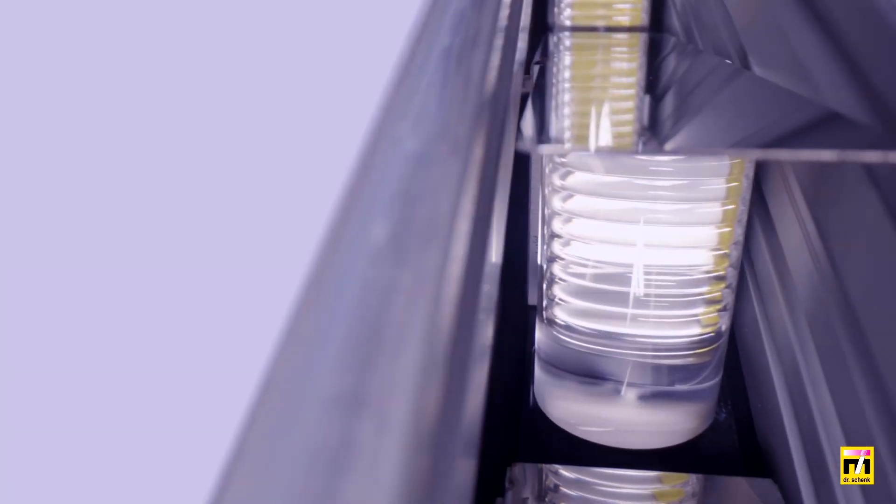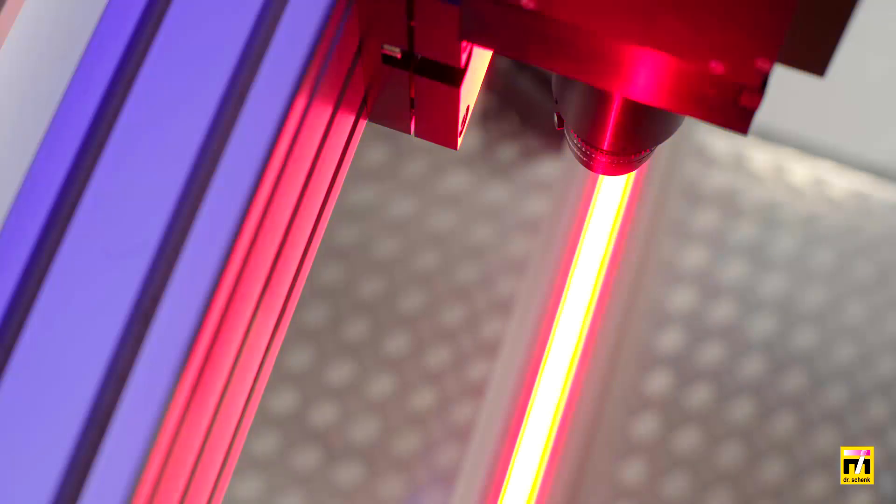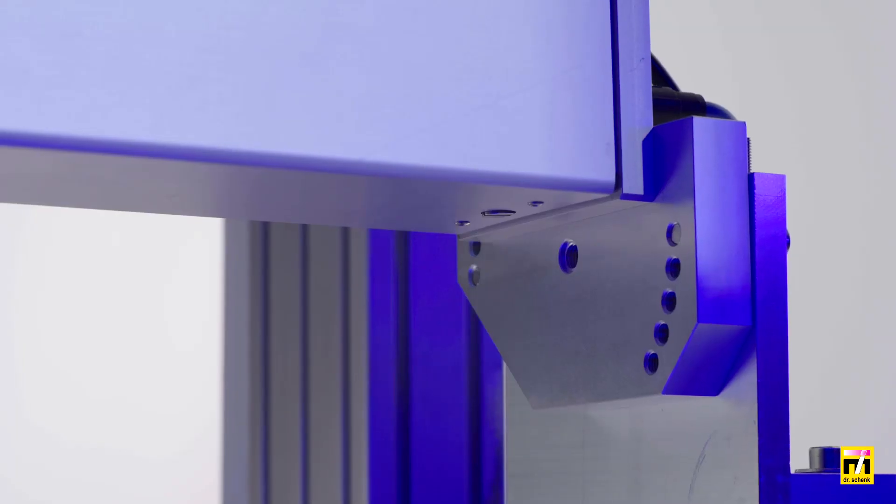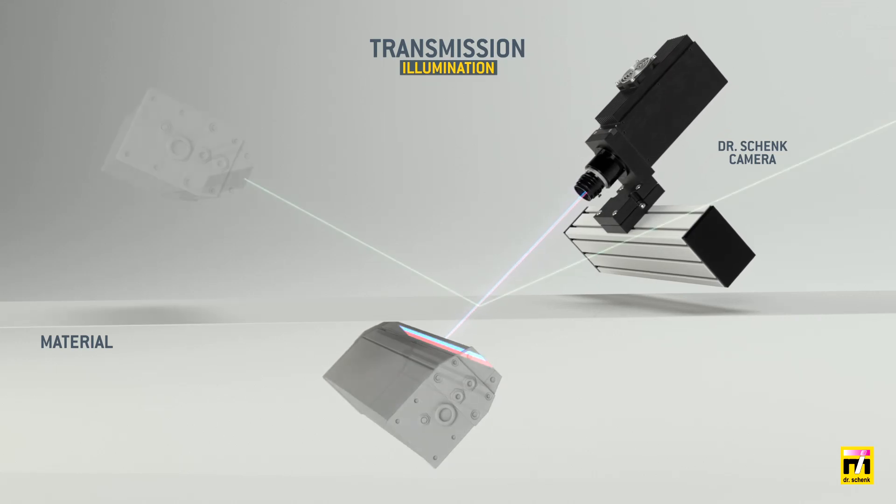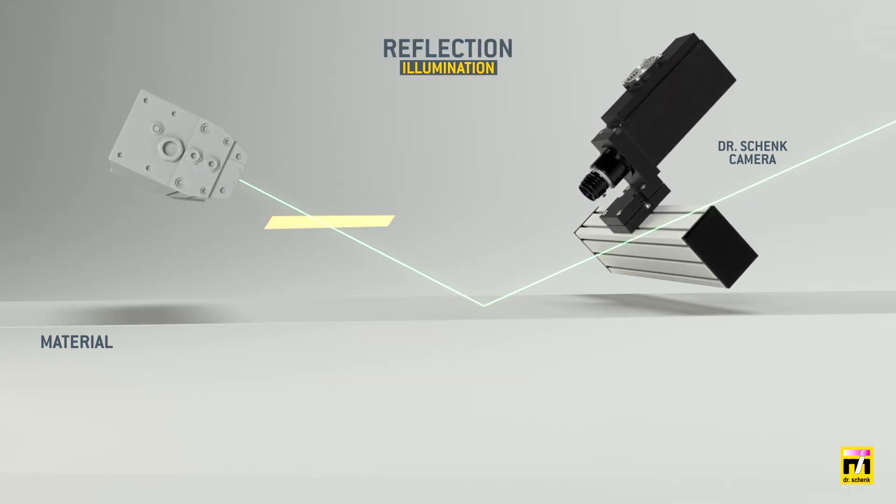Thanks to ultra-bright LEDs, we deliver 10 times more light than conventional inspection solutions do. Adjustable mounting brackets on illumination units and camera beams optimize transmission illumination and reflection illumination, as well as our special oblique illumination.